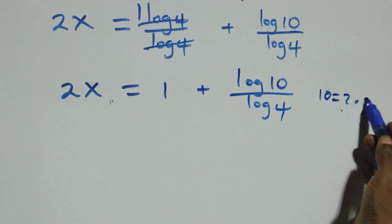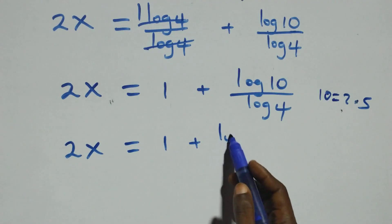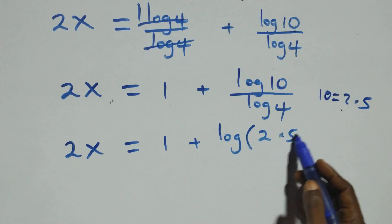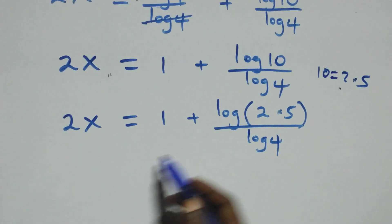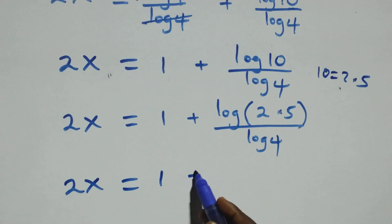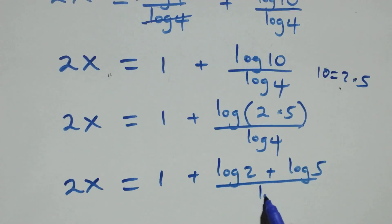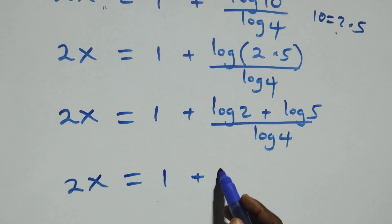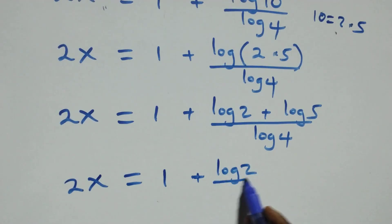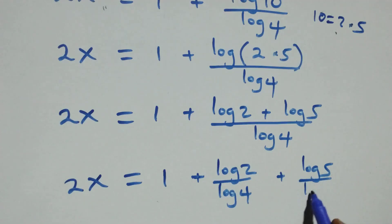Also, we can write 10 as 2 times 5. So all we have becomes 2x equals 1 plus log(2 times 5) over log 4. This follows the product rule of logarithms, so we write 2x equals 1 plus (log 2 plus log 5) over log 4. Separating into two fractions: 2x equals 1 plus log 2 over log 4 plus log 5 over log 4.